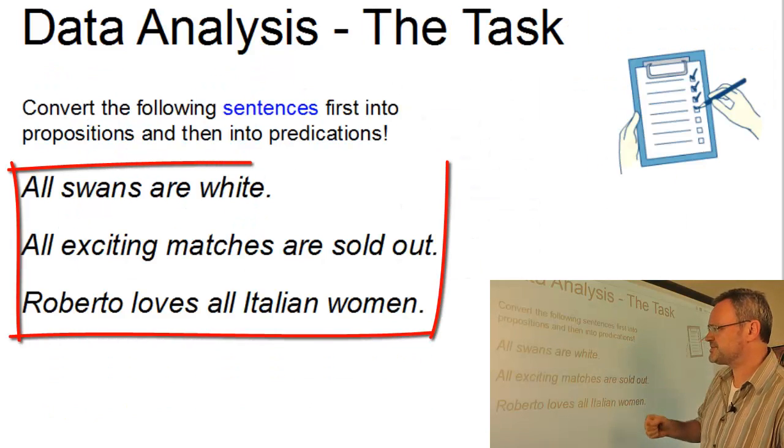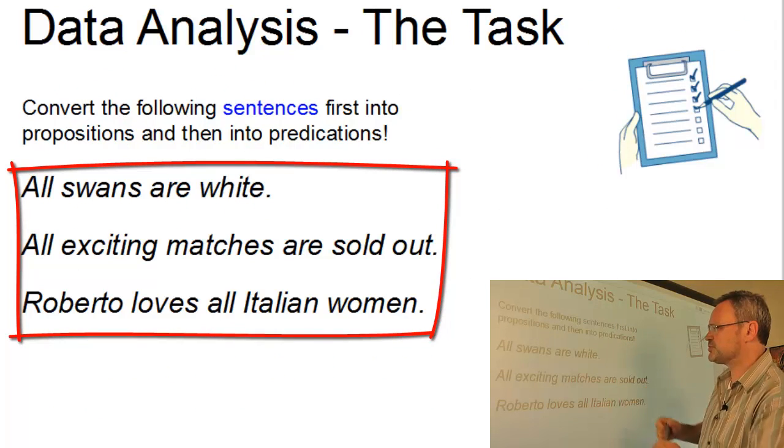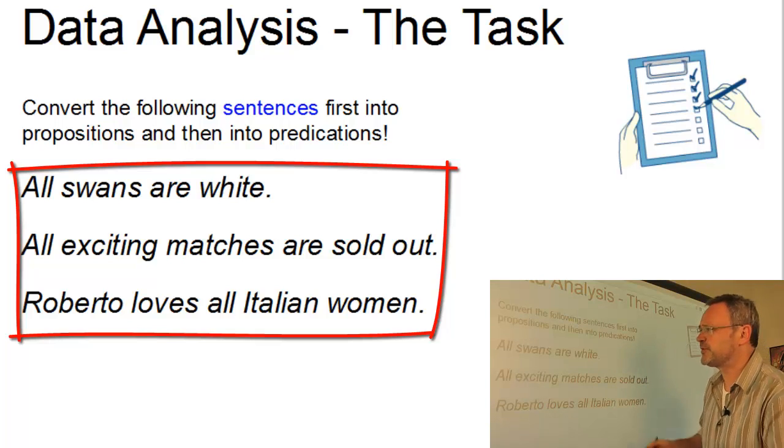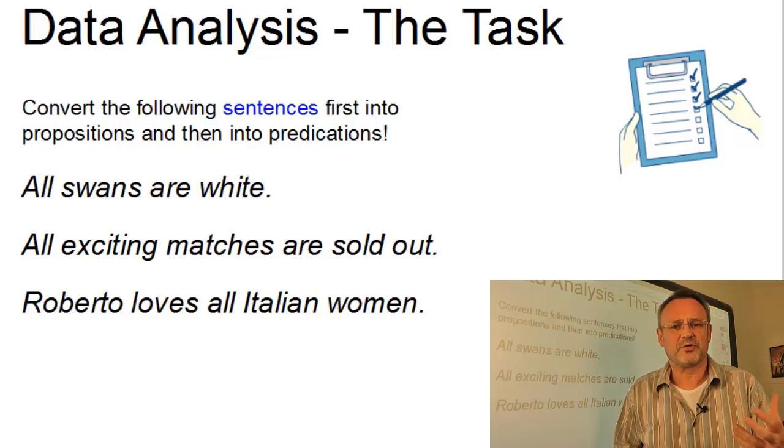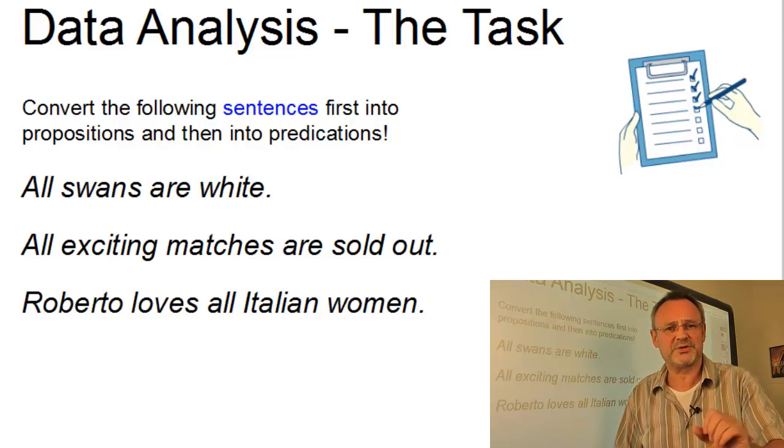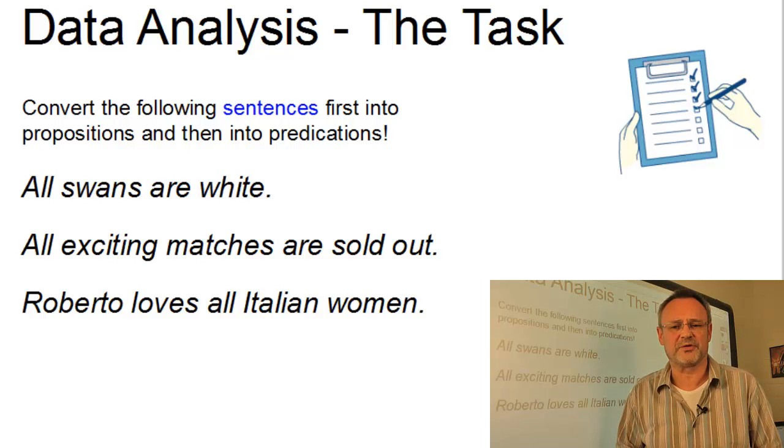We have to convert these three sentences - all swans are white, all exciting matches are sold out, and Roberto loves all Italian women - first into propositions and then into predications. If you want to try on your own first, pause the video here and compare your solutions with mine later on.